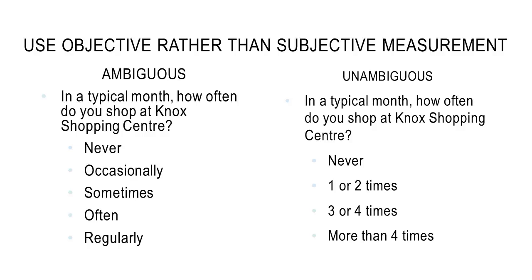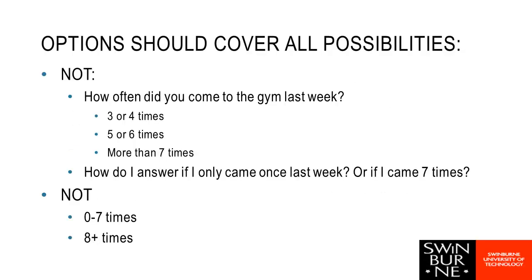When we can, we always want a measurement of behaviour rather than an ambiguous term. We should always make sure we cover all the possibilities. For example, a question about going to the gym last week with no options for 0, 1, 2, or 7 is incomplete. But we also want to make sure we don't collapse categories down — 0 to 7 as a single category is not particularly meaningful; we'd definitely want to split that into the most common groupings.